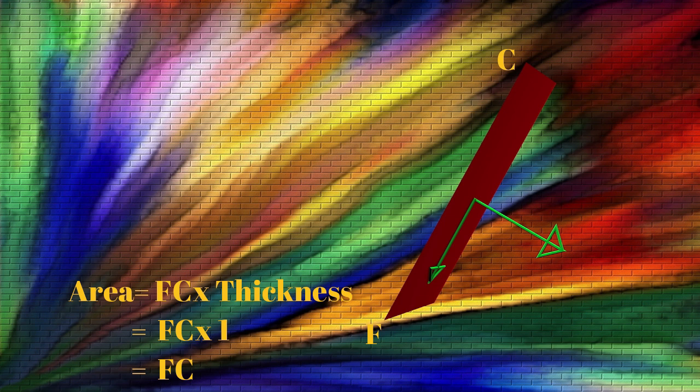The area of the inclined plane FC equals FC multiplied by its thickness, which is one, so the area equals FC. Now that we have the area, we only need to find the normal force Pn and shear force Pt to determine both stresses on this oblique plane.